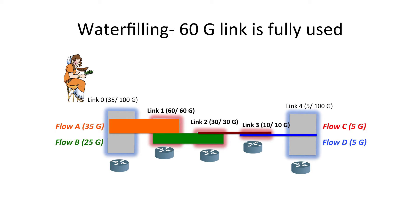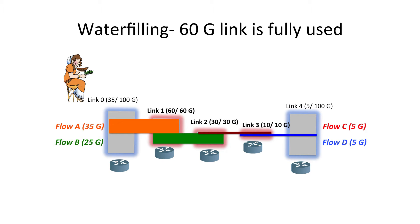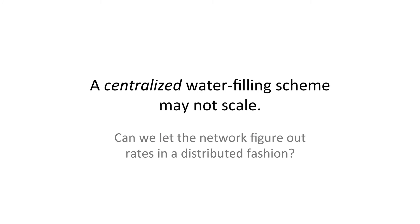We could try to implement this as an explicit rate calculation — it could be much faster than reactive schemes. But if we implement this in a centralized controller, the controller would have to be involved in every flow event. Every time a flow starts or ends it has to redo this calculation, and moreover it has to communicate these new rates to all affected flows. So we think that a centralized waterfilling scheme may not scale.